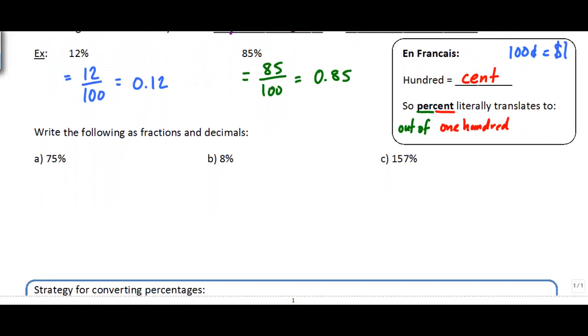As an example, if we want to write the following percents as fractions and decimals: 75% is the same thing as 75 out of 100. As we've learned previously, 75 out of 100 is the same as 75 one-hundredths. I can write that as 0.75, because this is our tenths column and this is our hundredths column, so there's 75 one-hundredths.